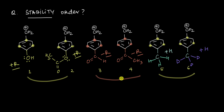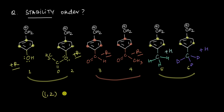Stability-wise, structures 3 and 4 are going to be the least stable of all. Now, resonance effects are stronger compared to hyperconjugation effects, because in hyperconjugation we actually need to break sigma bonds, which are more difficult to break compared to the pi bonds involved in resonance. Therefore, electron donation via resonance is much easier than via hyperconjugation, meaning the stability imparted by structures 1 and 2 (+R groups) is greater than that imparted by structures 5 and 6 (+H groups).